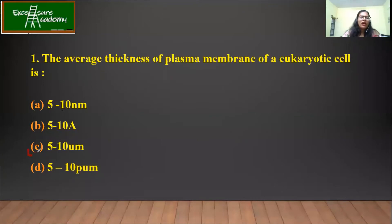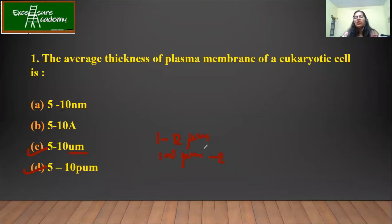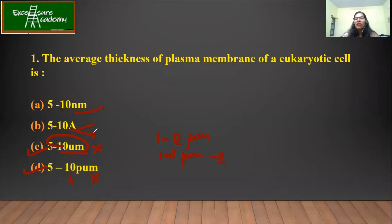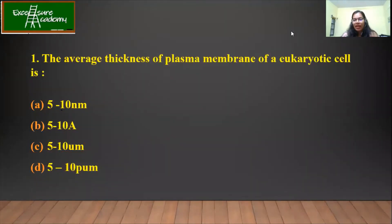It cannot be 5 to 10 micrometers because already the size of bacteria is around 1 to 2, and eukaryotes are about 100 micrometers. So you cannot have such a thick membrane. Going to the atomic level would also be wrong. Coming to nanometer and angstrom — beyond the atomic level is also wrong. Hence the answer is 5 to 10 nanometers. This is how, even if you don't know the answer, you can actually arrive at it.